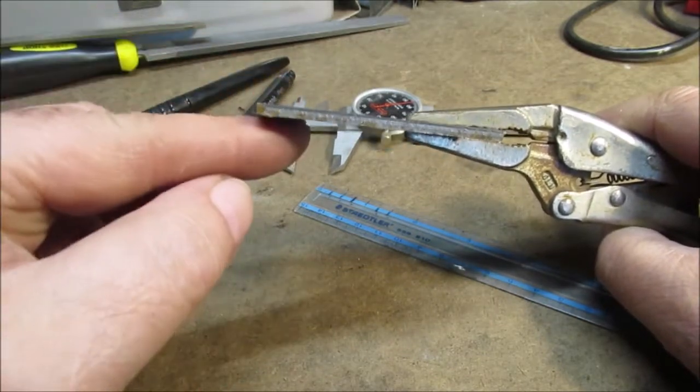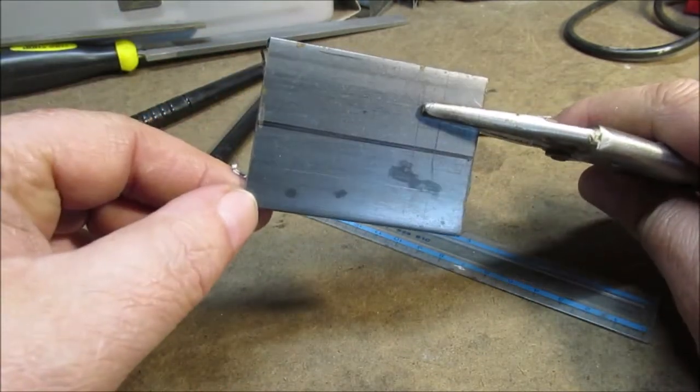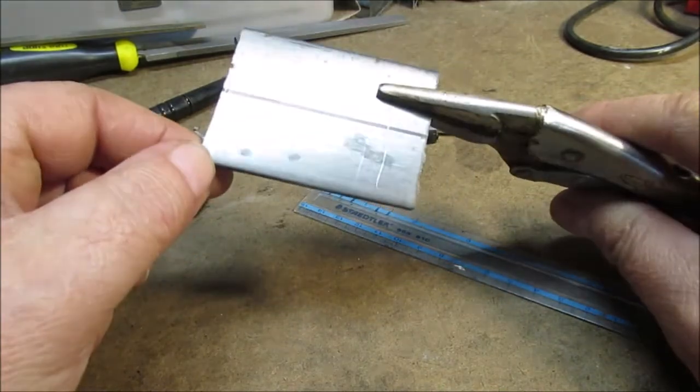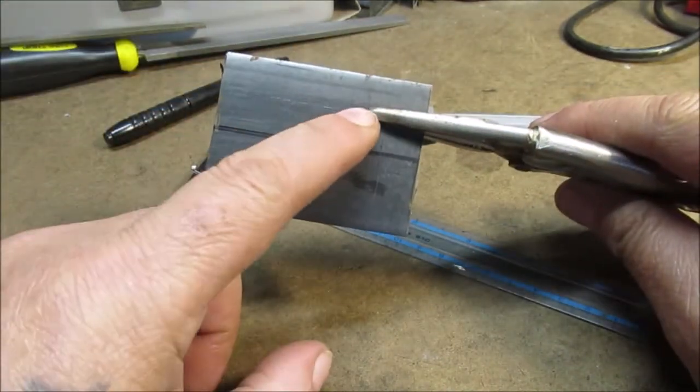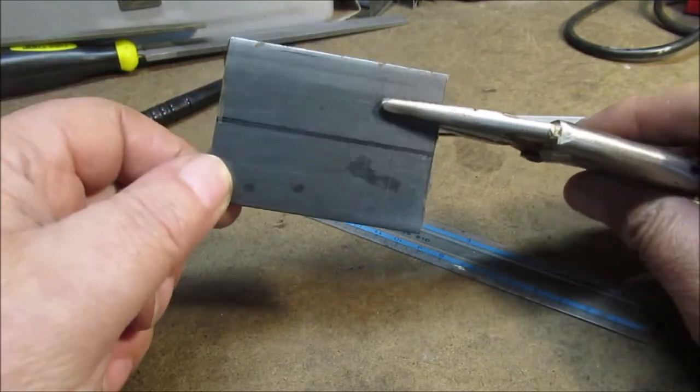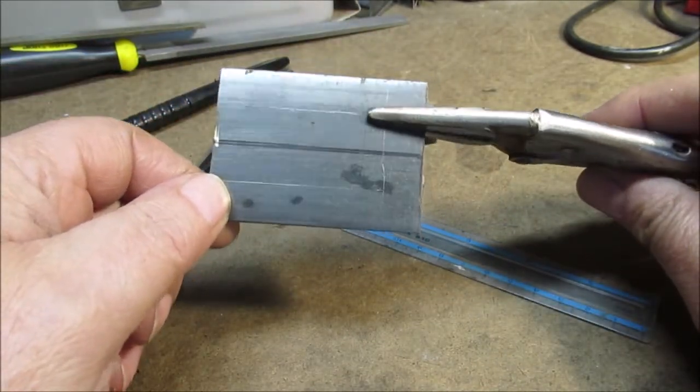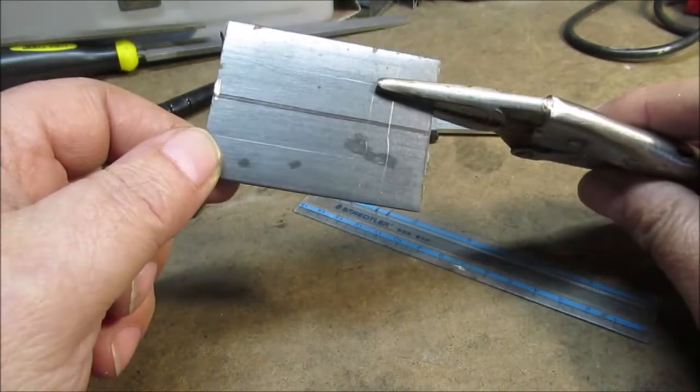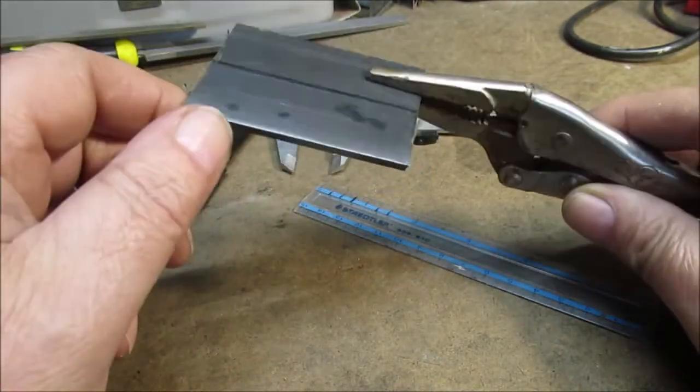Well, I'm getting too far ahead. Let's get these two pieces cut in half. I hope the welder works - haven't used it all winter long. Anyway, let's get this cut in half and clamped in here.